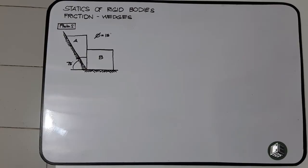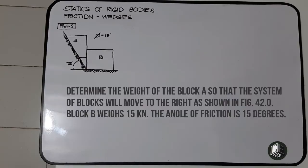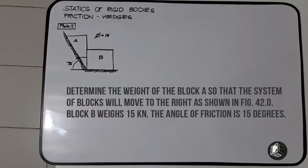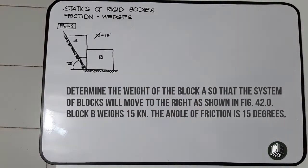This will be our problem number two for wedges. Determine the weight of block A so that the system of blocks will move to the right as shown in figure 42.0. Block B weighs 15 kilo Newton and the angle of friction is equal to 15 degrees.